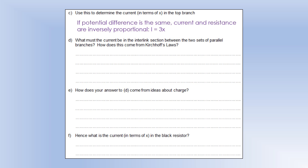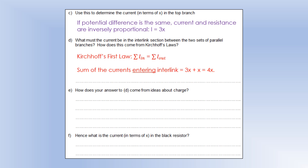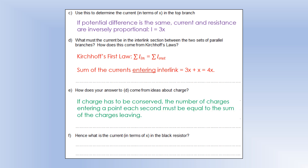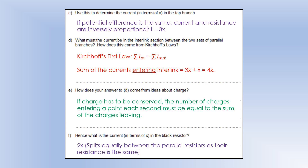The current in the interlink section must be 4x, because the sum of the currents going into it is x plus 3x. If charge has to be conserved, the number of charges entering a point each second must equal the sum of charges leaving, because the point cannot hold any charges. The current in the black resistor must be 2x, because the 4x splits equally between the two identical parallel resistances.